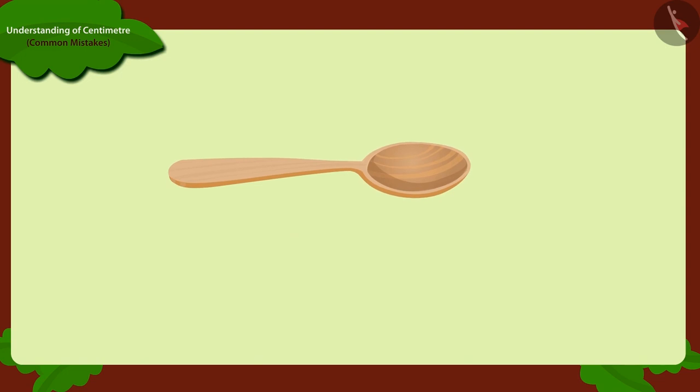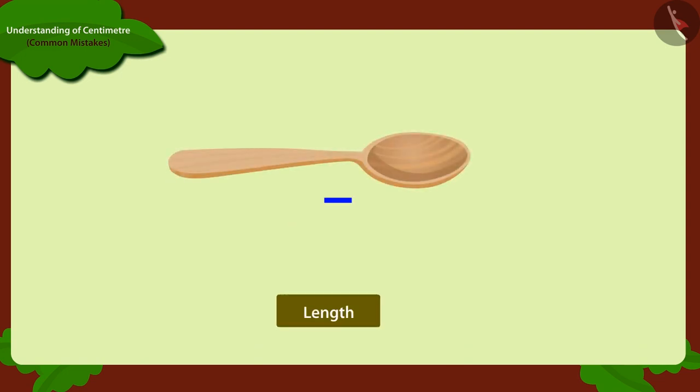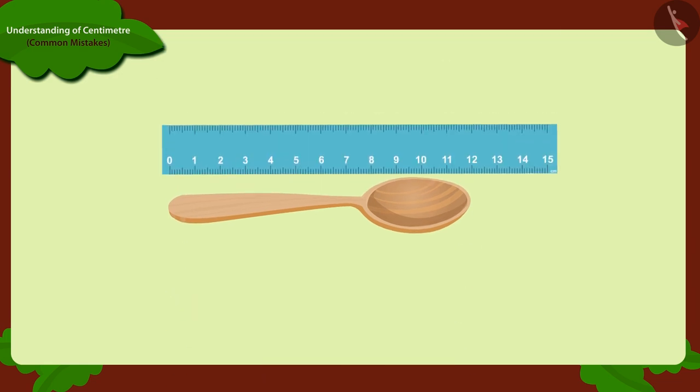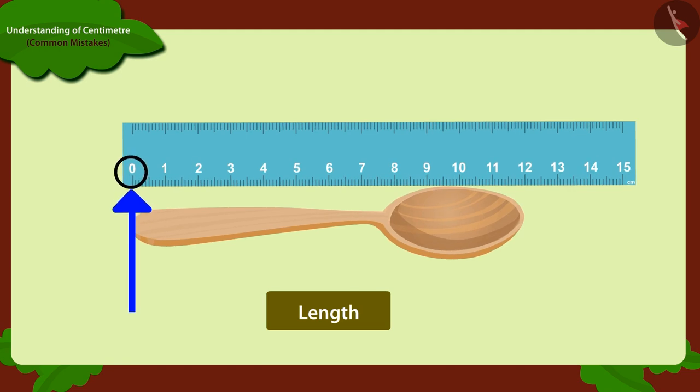Keep in mind kids, whenever we are measuring the length of any object with a ruler, then we should always keep in mind that we start measuring the length by the zero number.